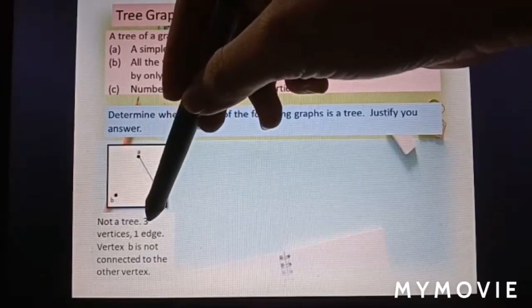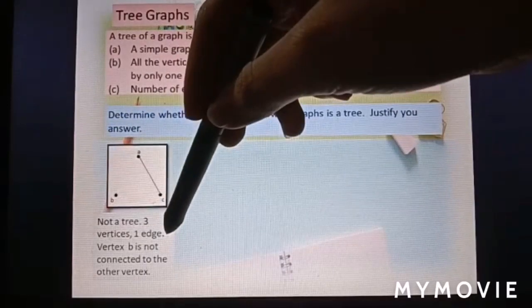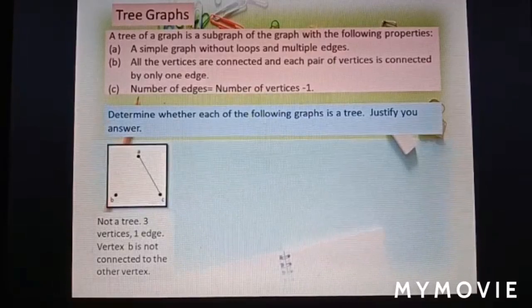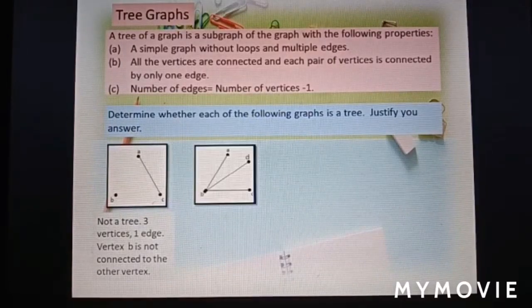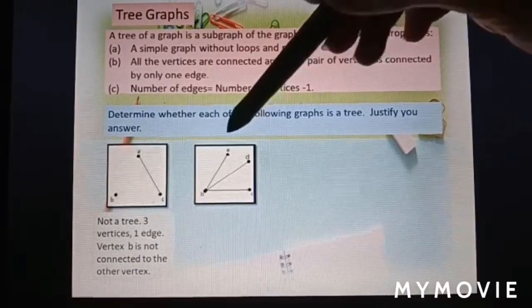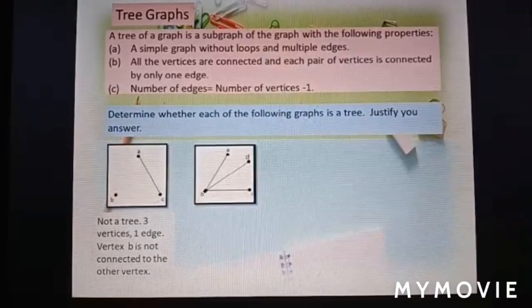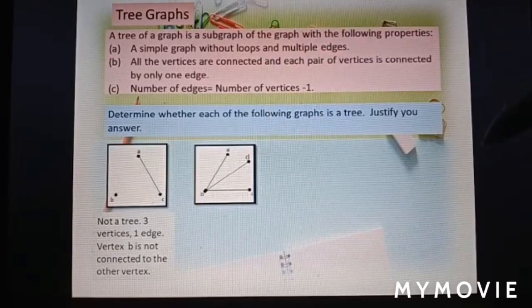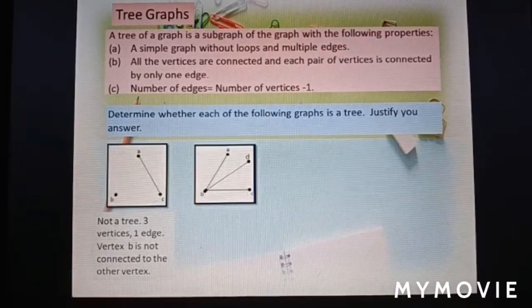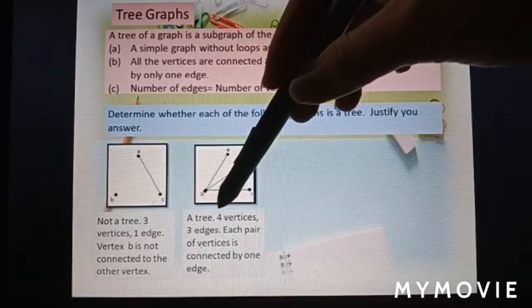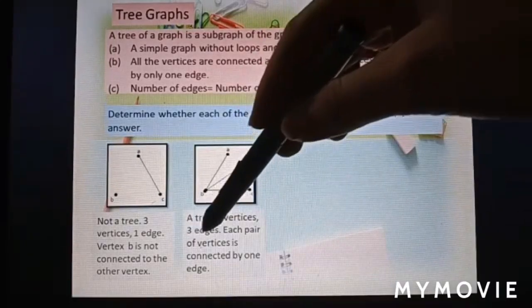Not a tree. 3 vertices, 1 edge only. Vertex B is not connected to the other vertex. Diagram 2: 4 vertices and 3 edges. 4 minus 1 equals 3. So this is a tree graph. Each pair of vertices is connected by one edge only.